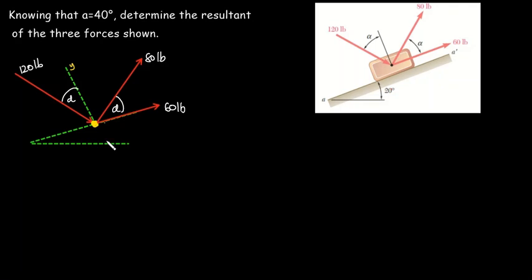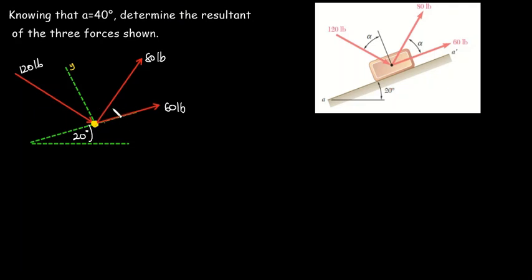We were given this figure, and I have drawn the free body diagram that we are supposed to use to work out the solution. You have this angle to be 20 degrees, and I'm representing the block as a point mass. We are given angle alpha to be 40 degrees, so let's write 40 degrees in both positions here.